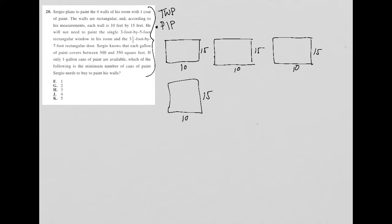He will not need to paint the single three foot by five foot rectangular window. So one of these walls contains a window that is three by five and the three and a half foot by seven foot rectangular door. Well, I don't know what the door is. Maybe the door is on the same wall with the window. Maybe not. It doesn't really matter. I'm going to put it here and just say, here's my three and a half by seven foot door.